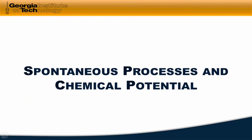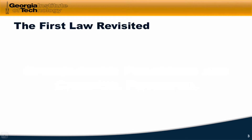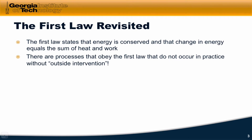To begin, let's start by defining what we mean exactly by a spontaneous process and talk about the idea of a chemical potential. The first law, just to jog our memories, states that energy is conserved in the universe and that a change in internal energy is equal to the sum of heat and work for a process.